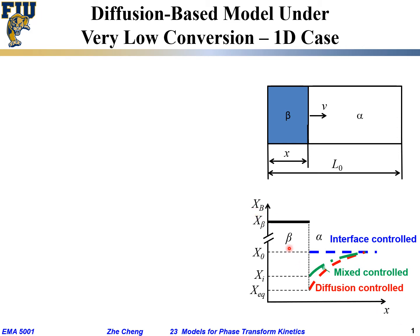Depending on the mechanism, we have different concentration profiles with respect to location. Within the beta phase, the concentration is constant at x_beta. Within the alpha or matrix phase, the concentration may vary. If it follows the blue dashed line, the concentration is the same as the original — that would be interface-controlled reaction, meaning diffusion is relatively fast but the interface rearrangement from alpha to beta is slow, so the concentration remains high even near the interface.